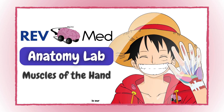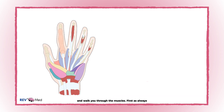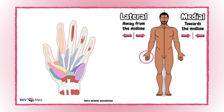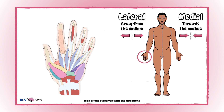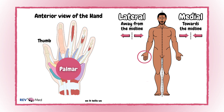Today in the anatomy lab is our illustration of the hand, which we're going to label and walk you through the muscles. First, as always, let's orient ourselves with the directions. This here is the anterior, or we can say palm side of the hand. The thumb sticks out in anatomical position, so it tells us that this is our lateral side.